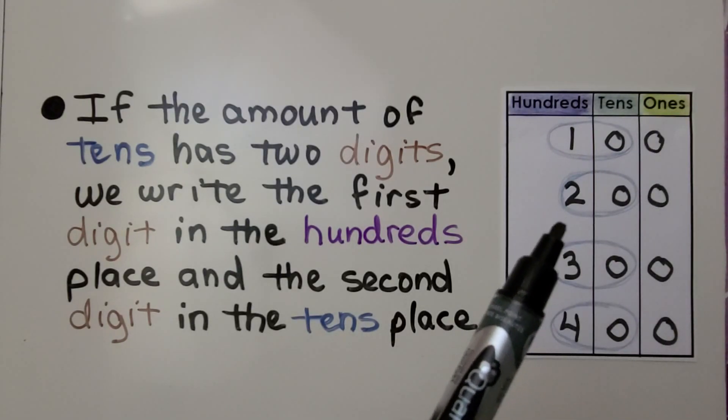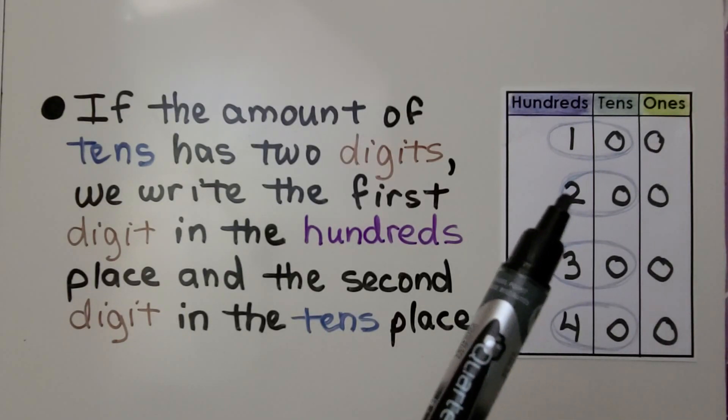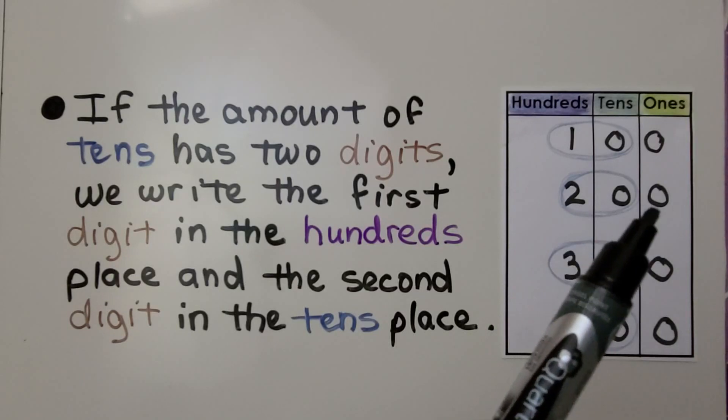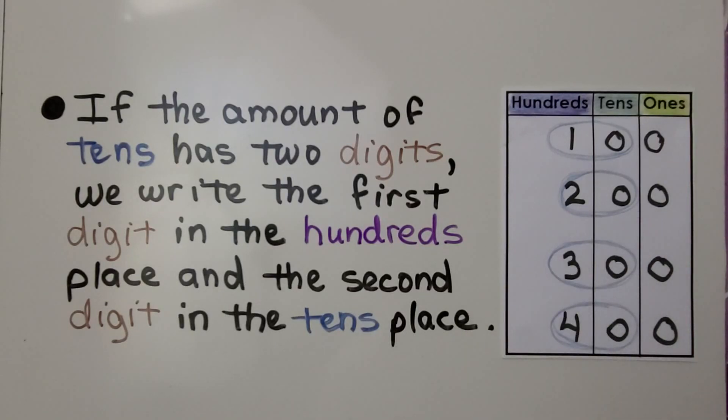If we have 20 tens, we write it as 200, zero tens, and zero ones — and so on.